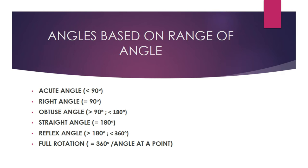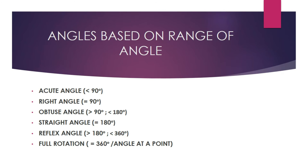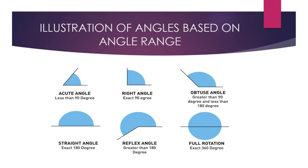We have the full rotation angle, which is 360 degrees. As we can see in the illustration of the ranges of the angles: the acute angle, the right angle, the obtuse angle, the straight angle or straight line, the reflex, and the full rotation.